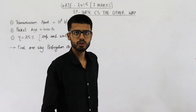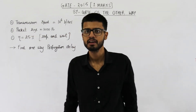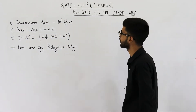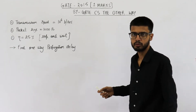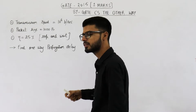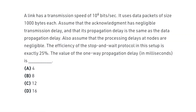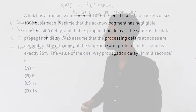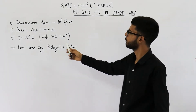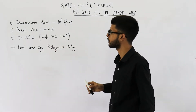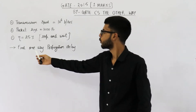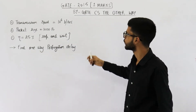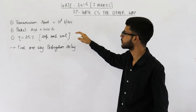Hello people, welcome back. This question is for one mark and is from the GATE exam of 2015. The statement is actually very lengthy, so I'll not be reading the entire statement — instead, just pause the video and have a look; I'll display its image. They are saying: in stop-and-wait protocol, if we want efficiency to be exactly 25 percent, what must be the propagation delay?